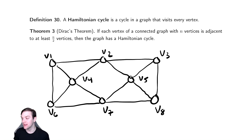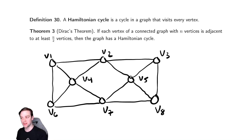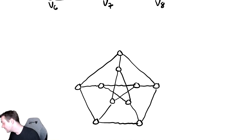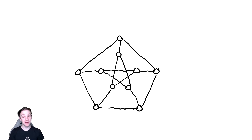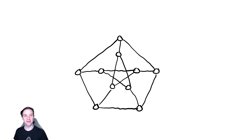Why is this theorem so bad? Let's look at a different example and see how easy it is to find a Hamiltonian Cycle within it. This is a somewhat visually satisfying graph called the Peterson Graph. It has a name because it turns out to be kind of a jerk when it comes to graph theory — it disproves a lot of theorems that you'd want to prove.